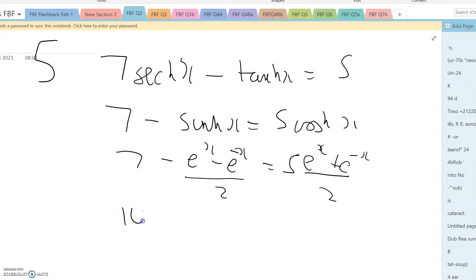Multiply by 2, and you get 14 minus e to the x plus e to the minus x equals 5 e to the x plus 5 e to the minus x.